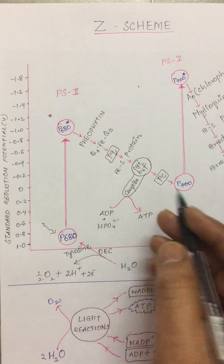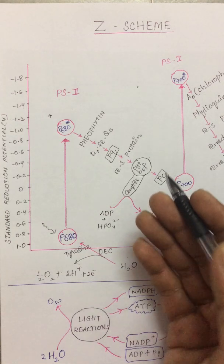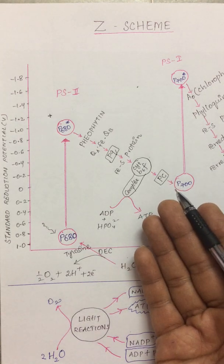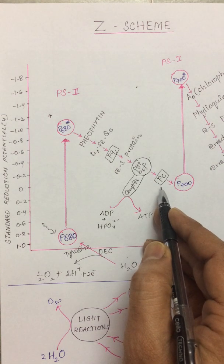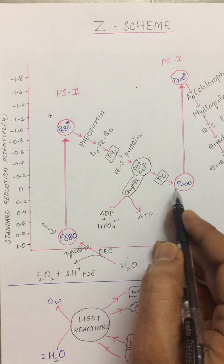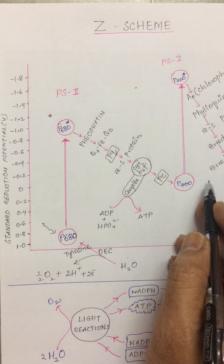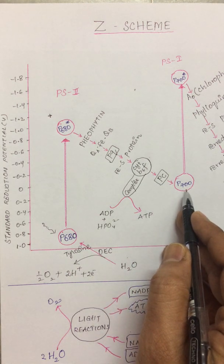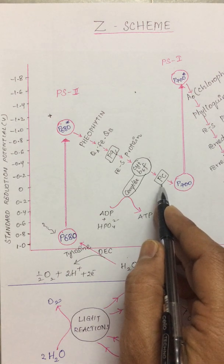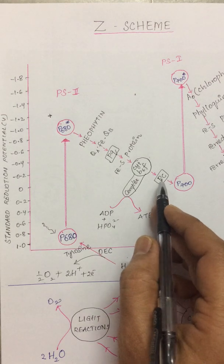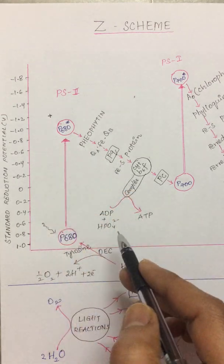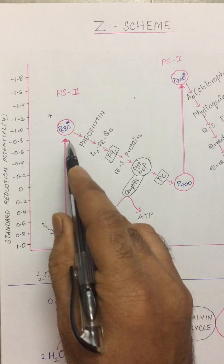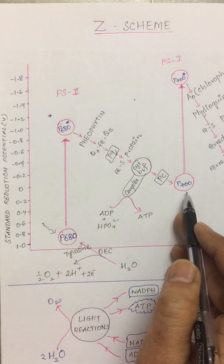Plastocyanin is a water-soluble protein that contains copper at its active site. It acts as an electron reservoir. Whenever P700 is depleted of electrons, plastocyanin supplies the electron. Once the plastocyanin copper gets oxidized, it takes electrons from the previous electron carriers. So from P680 we have now come to P700.